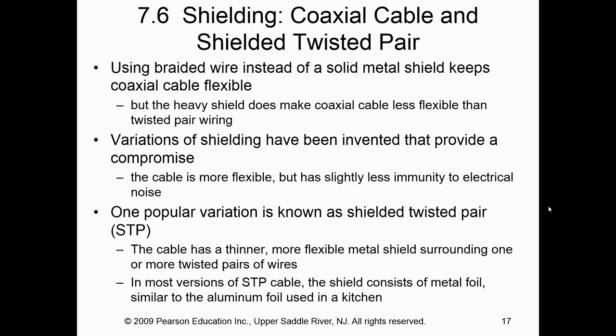Using that braided wire instead of a solid metal shield helps allow the cable to stay flexible. One of the popular variations is shielded twisted pair. The shielding can either be a braided mesh or a solid metal shield like tin foil, but depending on requirements, one may end up being less flexible.